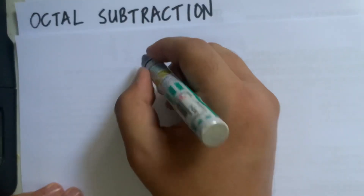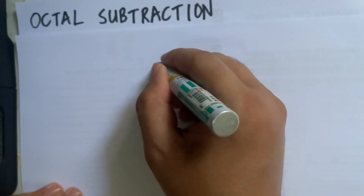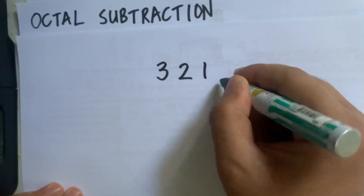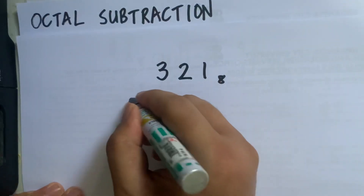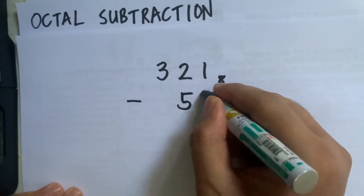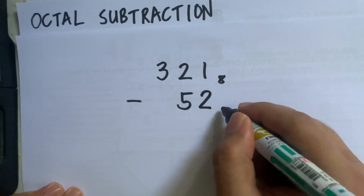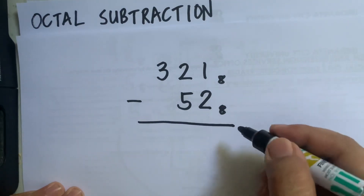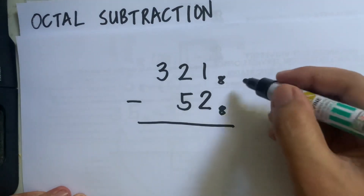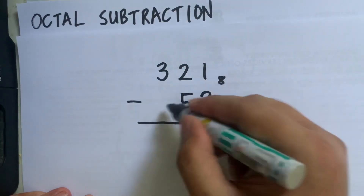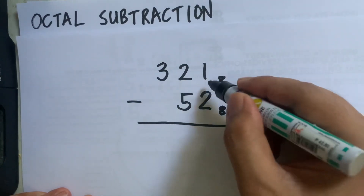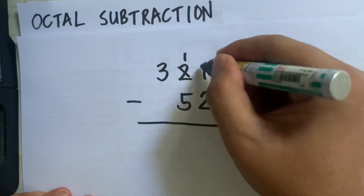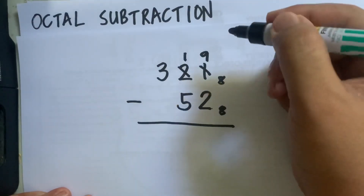Let's have another example: 321 in octal minus 52. We have 1 minus 2 — cannot be done — so 1 will borrow 1 from 2, making 2 become 1, and 1 here becomes 9.